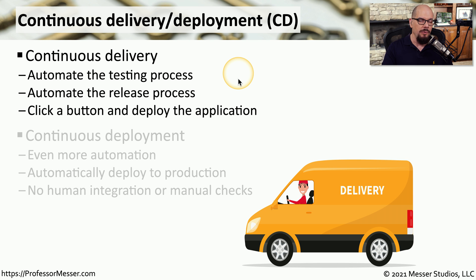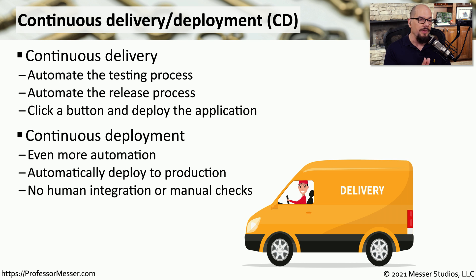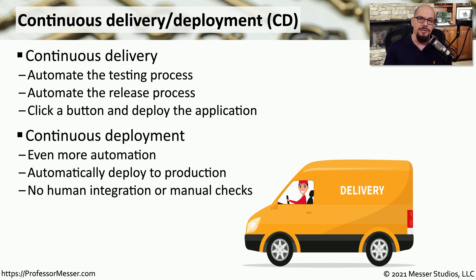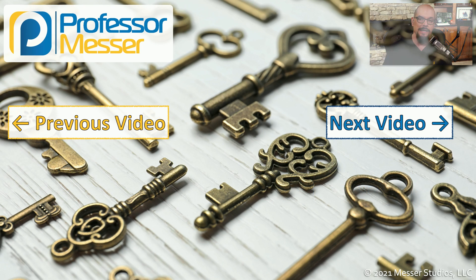If you want to have the entire process automated, we refer to that as continuous deployment. With continuous deployment, we're not waiting for a human being to click a button and send that application into production. Instead, the entire testing process and the deployment process is automated. If a problem is found during that testing process, the application will obviously not be pushed to production. But if all of our automated security checks go through all of the code and everything looks perfect, we can automatically send that to production without any delays at all.